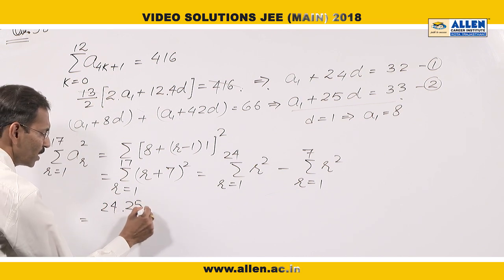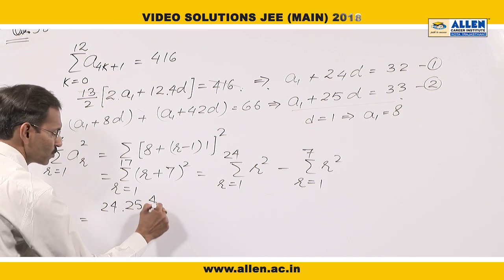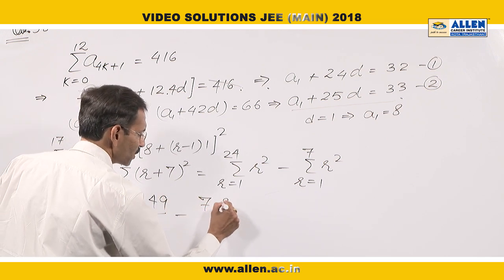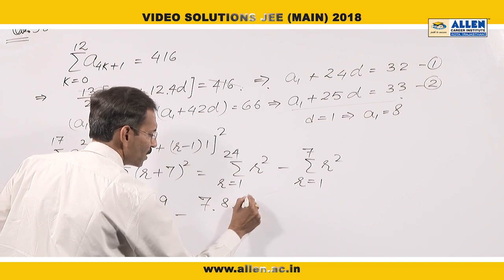So n(n+1)(2n+1) which is 49 over 6, minus for n=7, n(n+1)(2n+1) by 6.